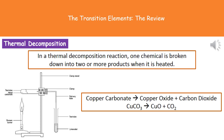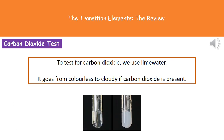Looking at the symbol equation, we start with CuCO₃, which is our copper carbonate — the one chemical we break down by heating. On the right-hand side of the arrow we have our two products: CuO for copper oxide and CO₂ for carbon dioxide. The reason we have lime water is to test for carbon dioxide. If you're asked on your exam what the gas test for carbon dioxide is, the answer is lime water.